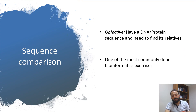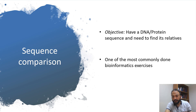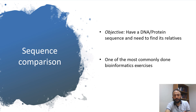So what is the objective of sequence comparison? As we have talked about sequence conservation, protein conservation, and variable sites — when we sequence a new protein or gene sequence, we want to look for its relatives, meaning we want to find which family this gene sequence belongs to, what the function of this protein is, or what the structure of the protein is. This is the most commonly done bioinformatics exercise.